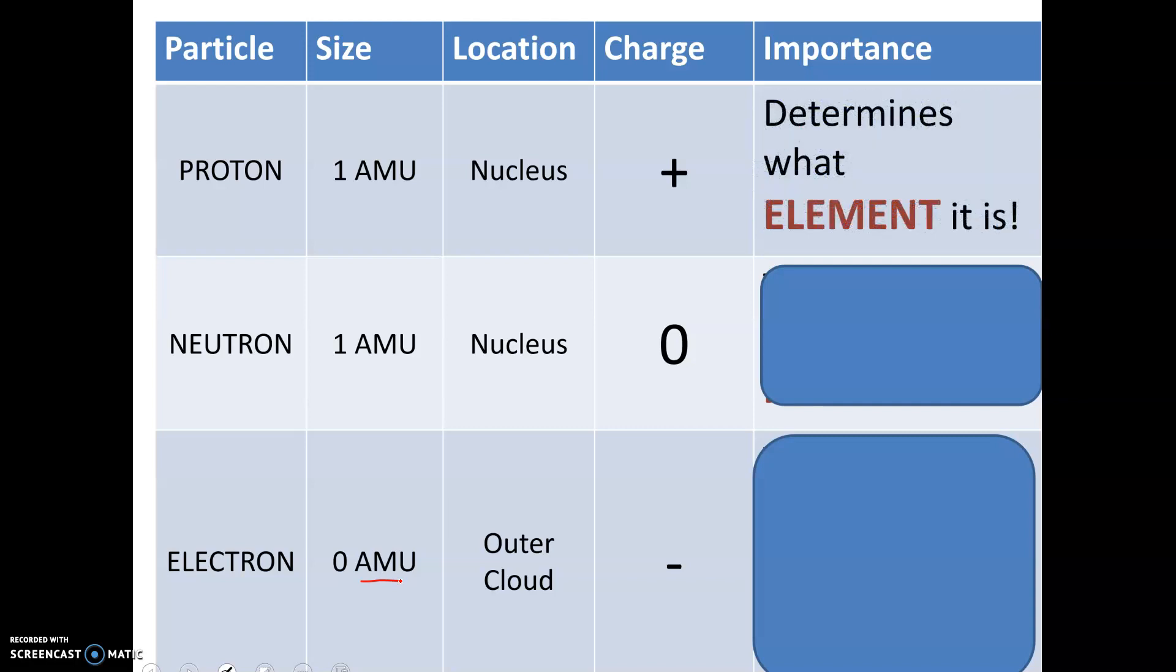Why are each of these things important? Protons will determine what element it is. For example, if it has 6 protons, it's carbon. If it has 1 proton, it's hydrogen. If you change the number of protons, you change the element. That's what really makes an element - the number of protons.